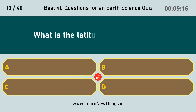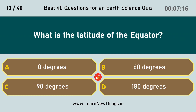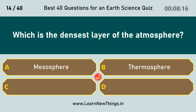What is the latitude of the equator? Zero degrees. Which is the densest layer of the atmosphere? Troposphere.